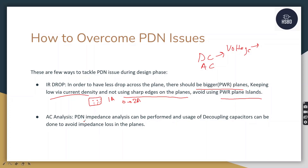For AC analysis, the PDN impedance profile is very important. For example, if your line impedance is 50 ohms, that is the maximum impedance your power plane can take. To keep this value low, use decoupling capacitors such that the capacitors' ESR — equivalent series resistance — value is nearest to the resonating frequency, and the resonating frequency of the capacitor is nearest to the frequency where your particular plot is failing. If you need a separate video with tools on this, comment below and we'll create one.